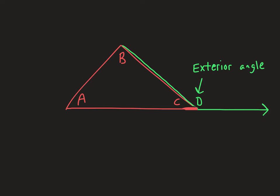Let's look at the relationship between exterior angles and the other angles in the triangle. In a random triangle, say the angle measures are A, B, and C. I drew an exterior angle next to angle C, and that is called adjacent — angle C and D are adjacent because they're right next to each other; they share that common side. We know that A plus B plus C equals 180, and that angle D plus angle C form a linear pair, so they also add up to 180 degrees.